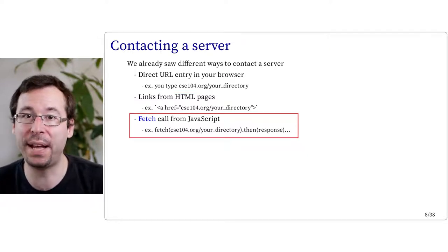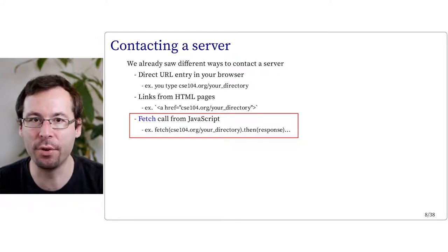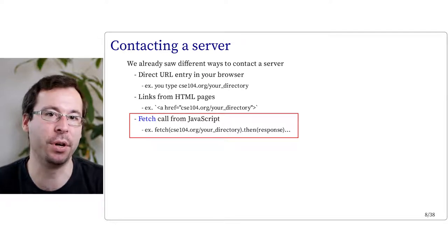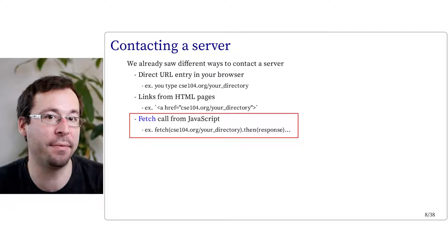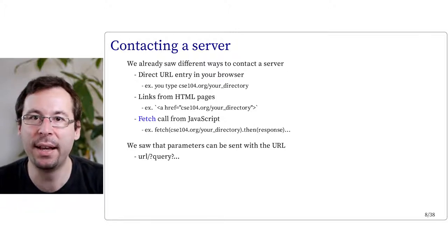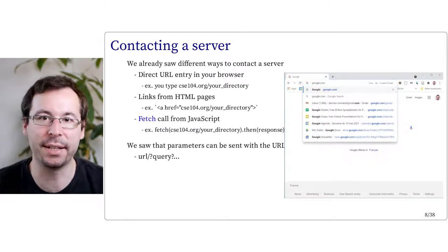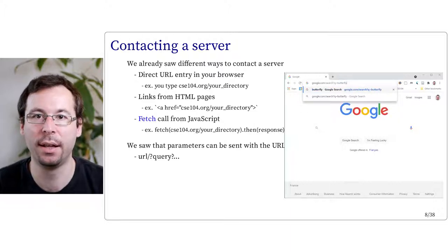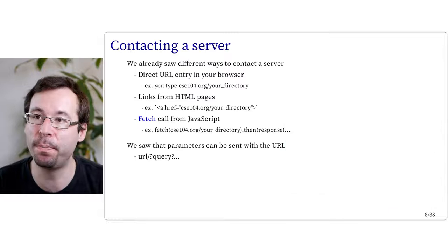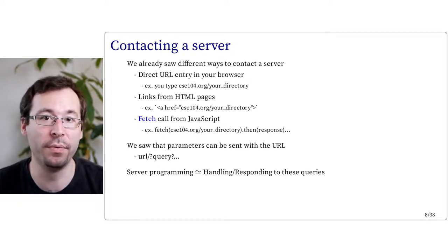There is a third way: using the fetch call in JavaScript. This fetch call was introduced in the last exercises on JavaScript when dealing with APIs. Basically, this fetch function asks your JavaScript code to contact a server, and the server's response can then be used in your code. You can also send parameters directly in the URL. For instance, to search for information about butterfly with Google, you can type google.com/search?q=butterfly. The specific answer you see depends on these extra parameters passed with the URL, and handling and responding to these queries with parameters is one of the main points of server programming.